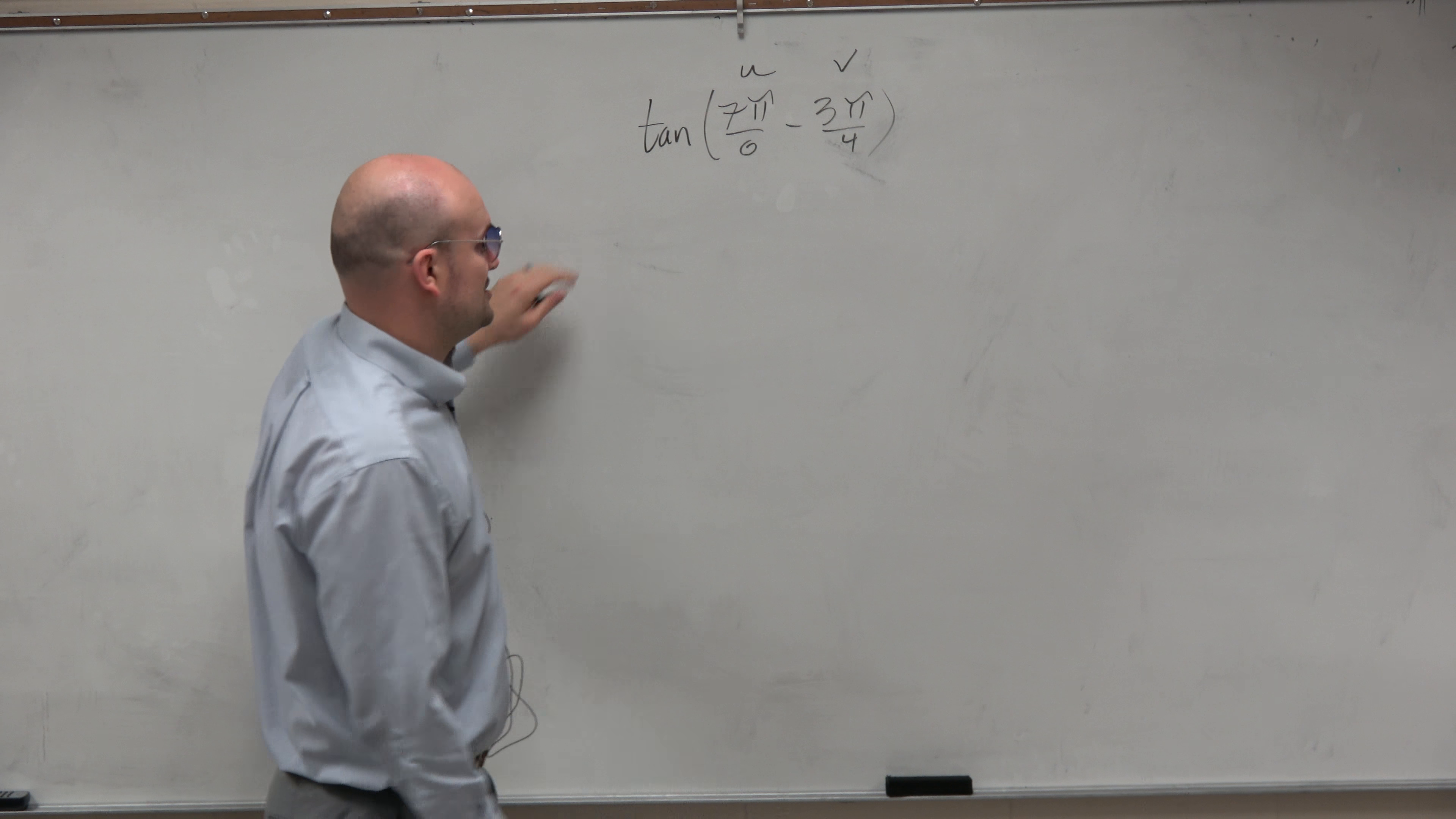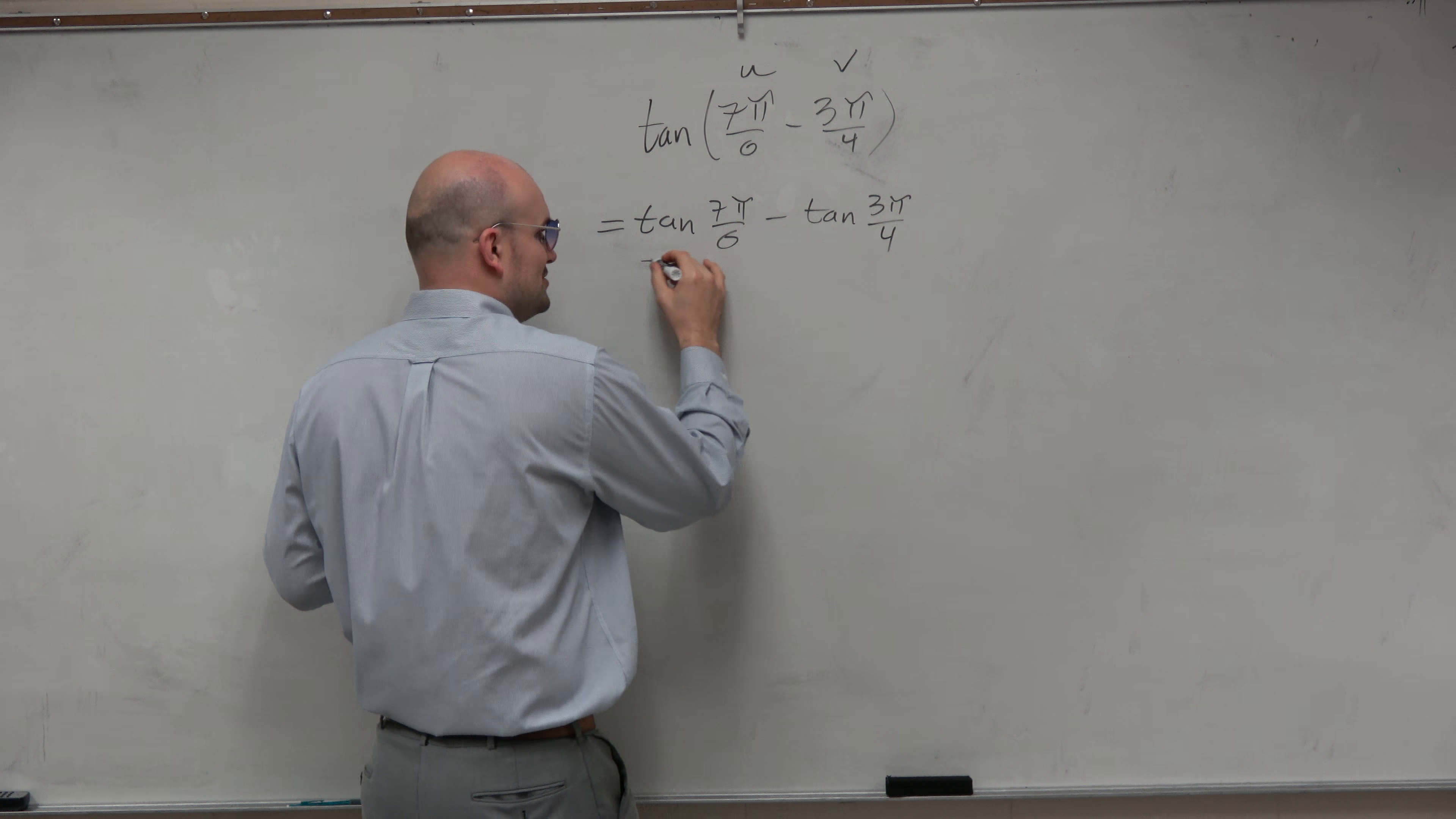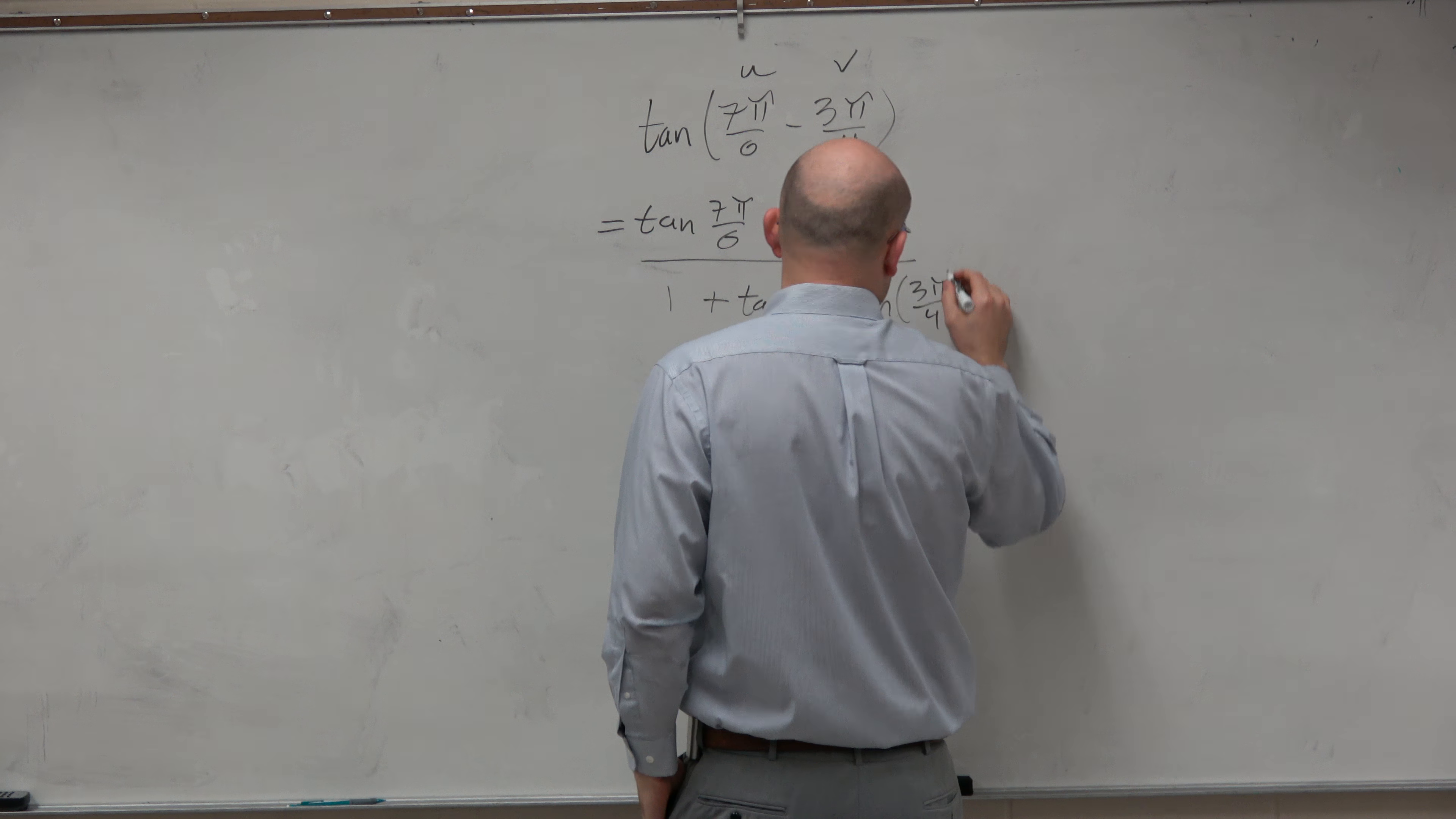So in this example, just like what we did before, we can rewrite this as tangent of 7π over 6 minus tangent of 3π over 4. There's no snickering behind my back, please. Then remember it's the difference of the other sign here, plus the tangent of 7π over 6 times the tangent of 3π over 4.